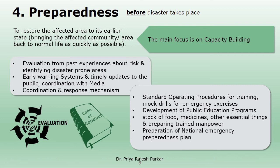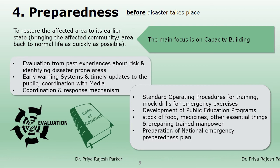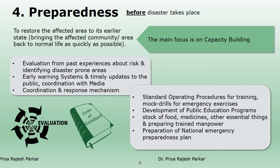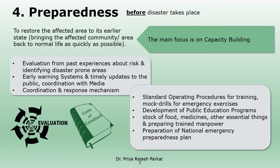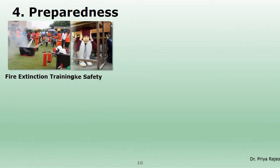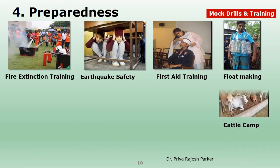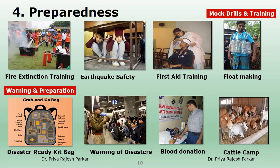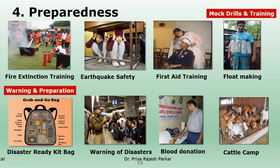In the disaster preparedness phase, emphasis is on ensuring stock of food, portable water, medicines, and other essential things. It also includes preparation of trained manpower to handle disasters, training on use of warning systems, timely updating the public, development of public education programs, and practicing mock drills. Trained manpower and competent government staff play a very important role in disaster preparedness.